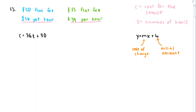For the second plumbing service, the cost is $39 per hour times T, plus the fixed amount of $35. We can see that as we spend more time using the second service, the $3 per hour difference will eventually add up and surpass the difference in the initial fees. But if Justin only needs a small amount of time, the second service might be better.